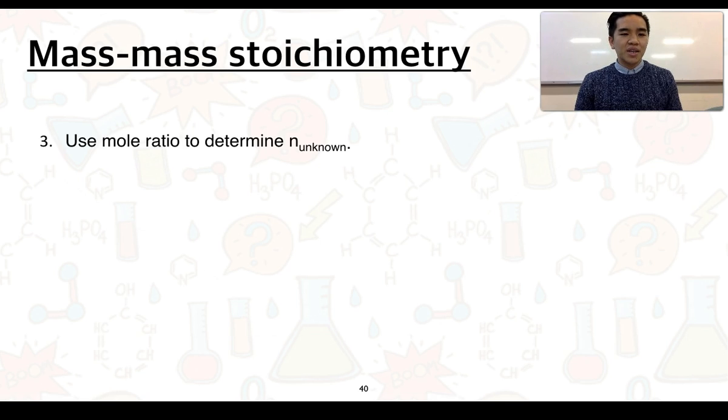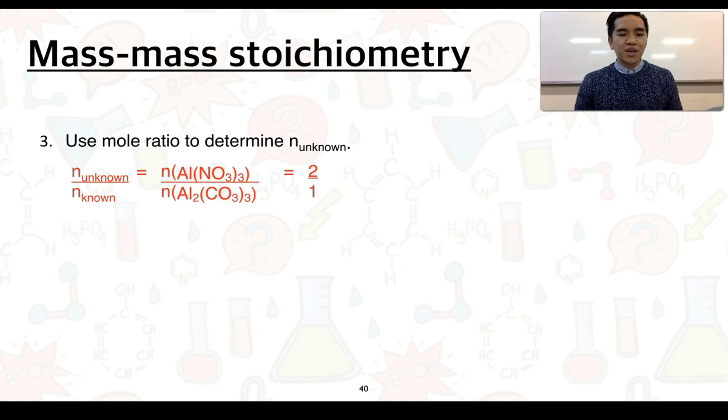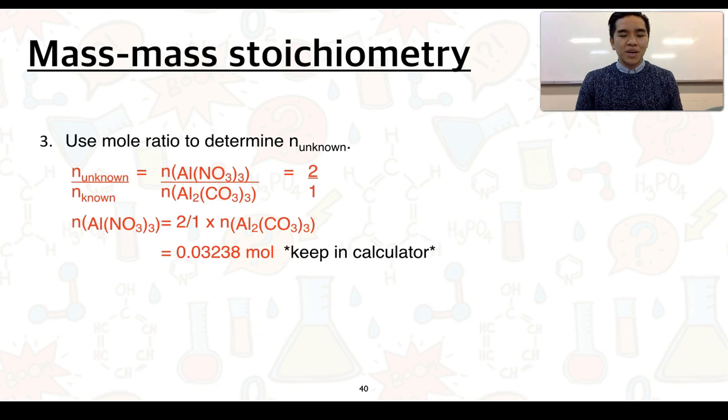Then, in step 3, we're going to use mole ratios again to determine the number of moles of our unknown. So, expressed here, the number of moles of aluminium nitrate over the number of moles of aluminium carbonate is equal to a ratio of 2 to 1. Rearrange the equation, so you get the number of moles of Al(NO3)3 is equal to 2 over 1 times the number of moles of aluminium carbonate. And we get about 0.03238 moles, again, keep that in your calculator.